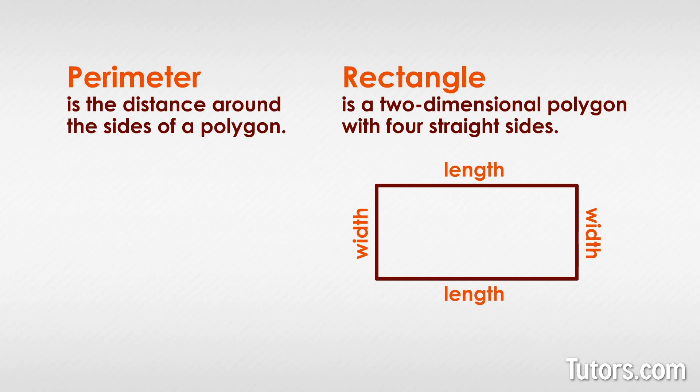To calculate perimeter in general, you simply add up the lengths of all the straight sides of a polygon. For a rectangle, that means adding four sides. Here is the equation. P is the perimeter and A, B, C, and D are the lengths of the four sides.